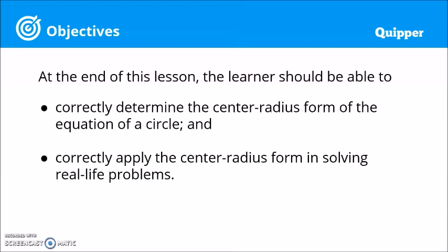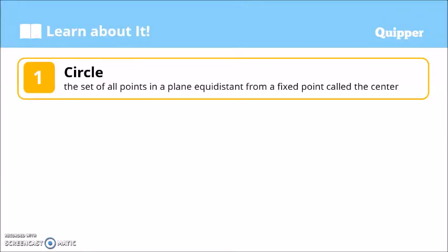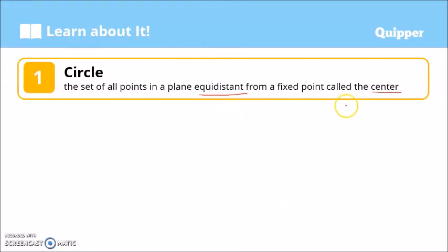But before that, what does a circle mean? A circle is the set of all points in a plane equidistant from a fixed point called the center. So the circle is the set of all the points — not just the space, but the points — that are equidistant, meaning they have the same distance from the center of the circle.